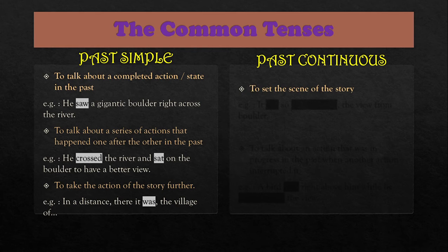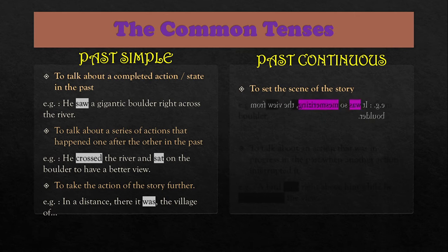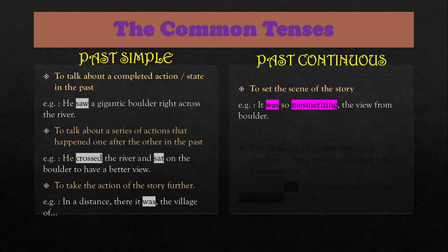Now let's take a look at past continuous. We use past continuous to set the scene of the story — when we want to talk about the background, the time, and everything. For example: 'It was so mesmerizing, the view from the boulder. The wind was blowing, the birds were chirping.' That is the background, the setting.